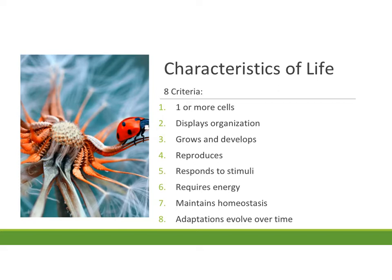If biologists are going to study life, we have to ask: what is life? How do you decide if something is alive, not alive, or once was alive? Biologists have come up with eight characteristics — criteria to classify something as being alive: made up of one or more cells, display organization, grows and develops, reproduces, responds to stimuli, requires energy, maintains homeostasis, and adaptations evolve over time. Something must meet all eight criteria to be classified as living — not seven, not six, all eight.